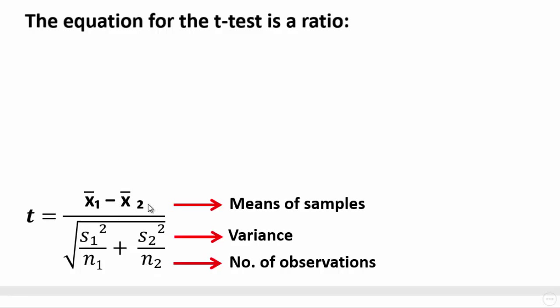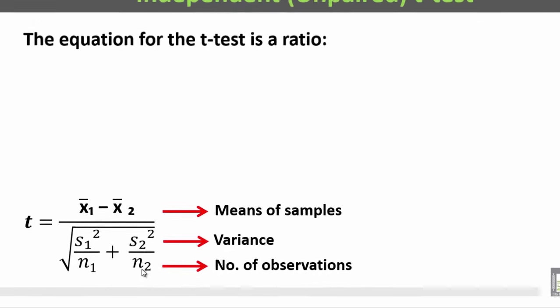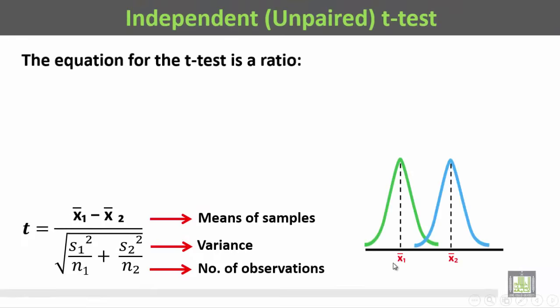In the numerator we have the difference between the first mean and the second mean. We have the means of the samples in the numerator, while in the denominator we have the variance and the number of observations in both groups. This is the mean of the first group and this is the mean of the second group.